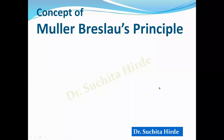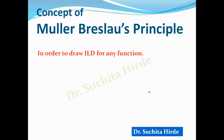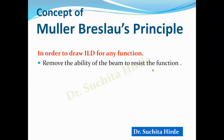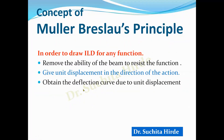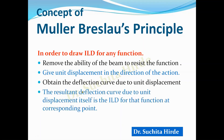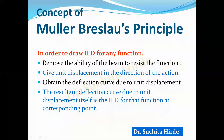To draw the qualitative influence line diagram, we will use the Mueller-Breslau principle, which we discussed in the previous video. Just to revise: in order to draw the influence line diagram for any function using the Mueller-Breslau principle, first we remove the ability of the beam to resist that function. Then we give a unit displacement in the direction of the function's action. Then we obtain the deflection curve due to that unit displacement. Whatever deflected curve results is itself the influence line diagram for that function at the corresponding point.